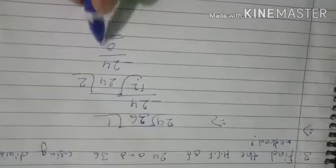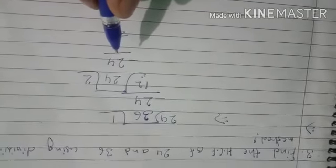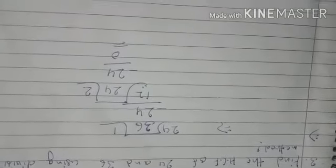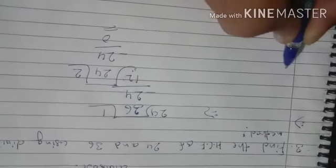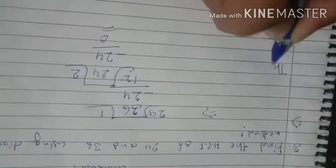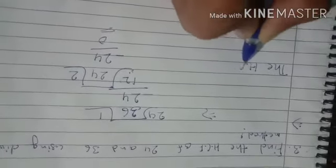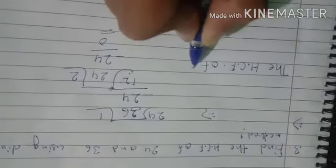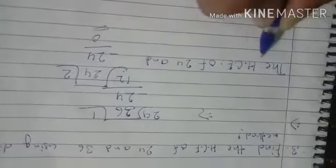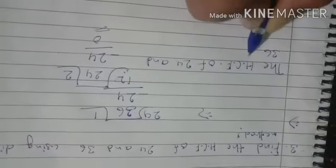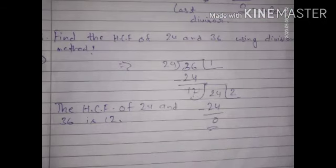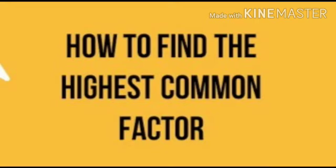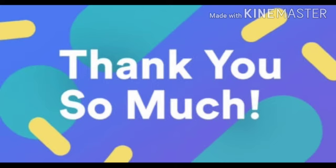Here you got the remainder at 0, so the last divisor is the SCF of them. This means the SCF of 24 and 36 is 12. I hope you understand how to solve SCF, what is SCF, and what is the full form of SCF. Thank you for watching this video.